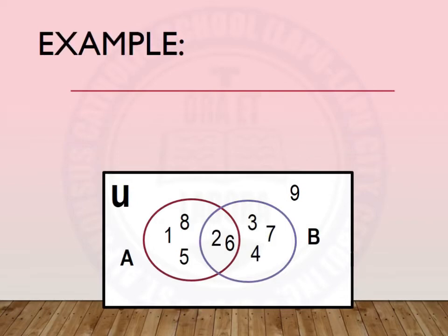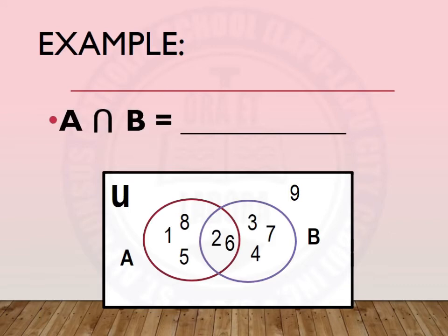Let's have more examples. We are given a Venn diagram which has two sets, set A and set B. We are asked, what is A intersection B? Based on the Venn diagram, the elements common to both sets A and B are 2 and 6. So, the intersection of A and B is 2 and 6.